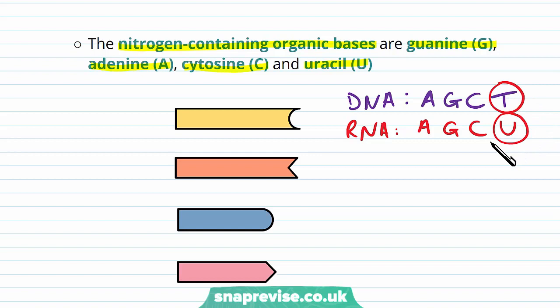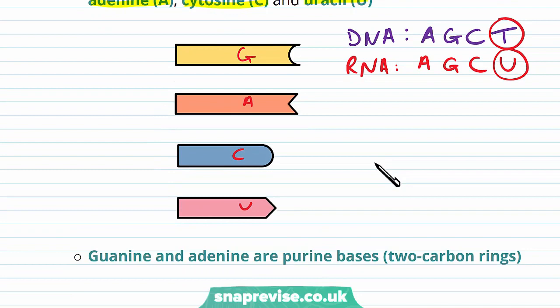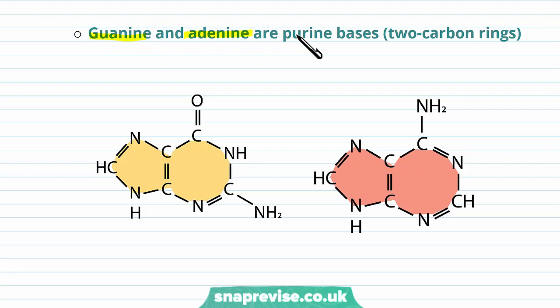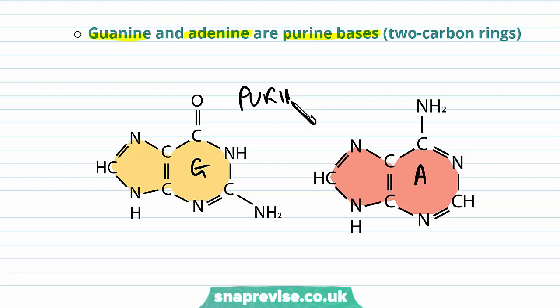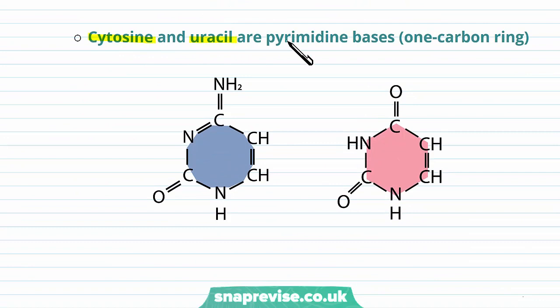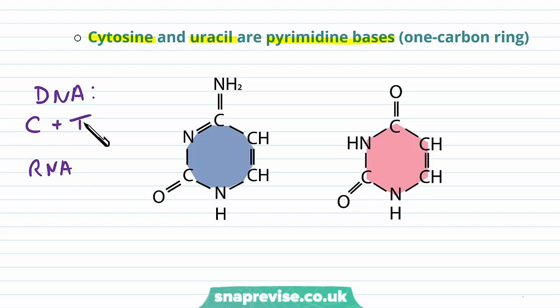In the same way that DNA works, guanine and adenine are the purine bases — the large ones with two carbon rings — making them larger than the other two types of bases. Here we've got guanine on the left with its two rings, and adenine on the right again with its two rings. These two purine bases are found in both DNA and RNA. Cytosine and uracil are the two pyrimidine bases found in RNA — these are the smaller bases with one single carbon ring. In DNA, cytosine and thymine were both pyrimidines, but in RNA the thymine has been replaced by uracil, so now cytosine and uracil are both the pyrimidine bases.